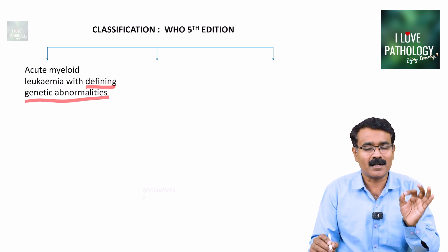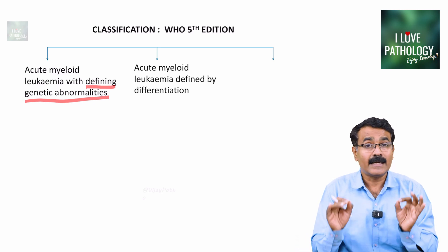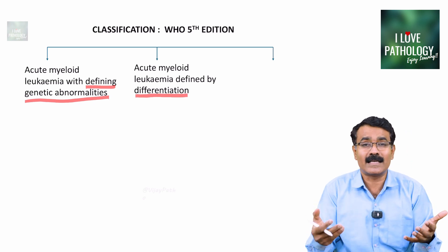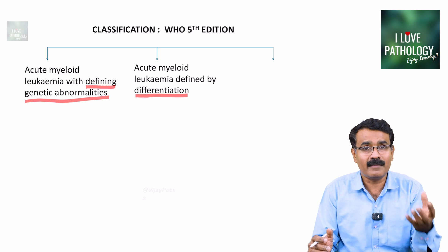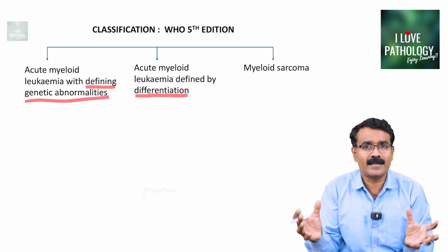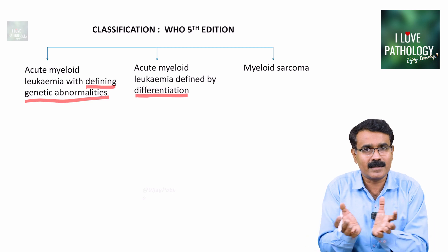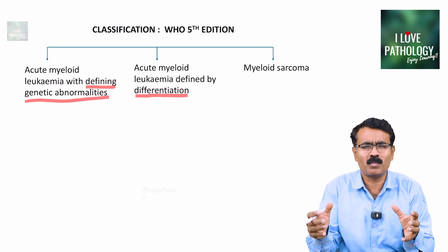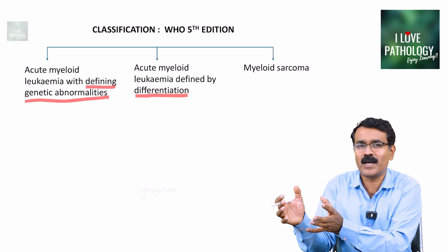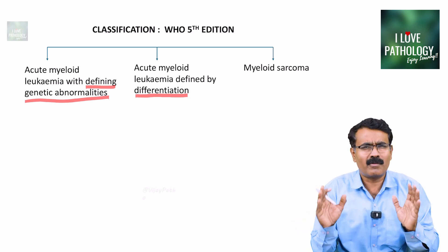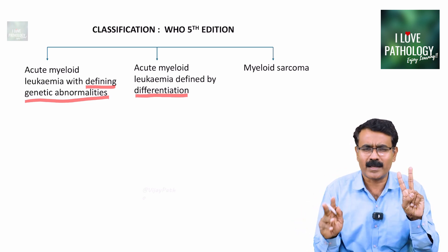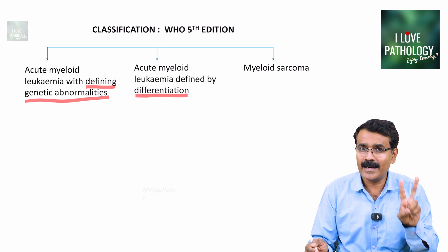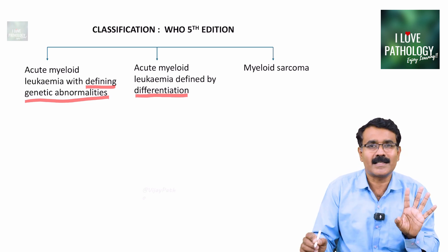AML with defining genetic abnormalities is the first category. The second category is AML defined by differentiation — this is more of a morphological classification. The third one, considered a separate entity, is myeloid sarcoma, meaning localized proliferation of myeloid precursor cells. For all practical purposes, remember two important things: AML with defined genetic abnormalities, and AML defined by differentiation.